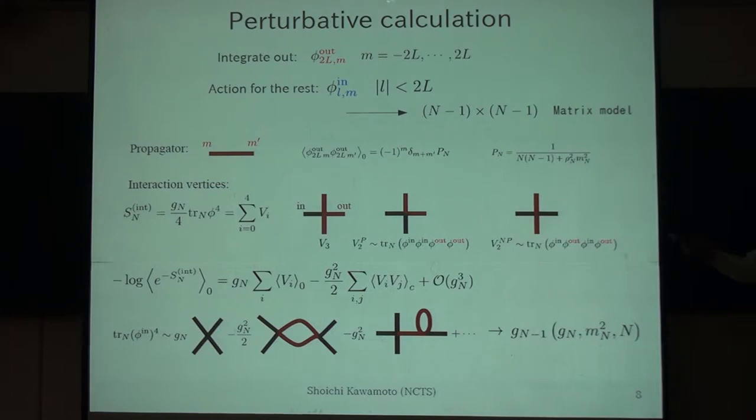So, calculations are simple. I am going to be integrating out some largest angular momentum mode L equals capital L, and then writing down the effective action for the rest of the modes. So, for this highest mode, I define the propagator, which is diagonal, and the interaction vertices can be classified into how many this high mode includes.